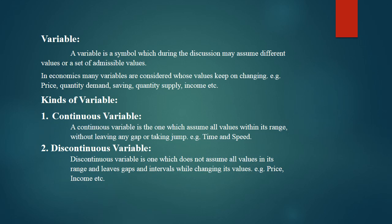A continuous variable is one which assumes all values within its range without leaving any gap or taking a jump. If we change the values at each point within the range, increasing every value step by step, then we will have a continuous variable. When the value is changed, there is no gap or jump.